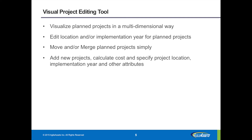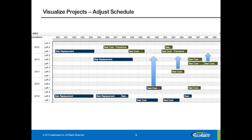This makes it really easy to visualize those things, pull them together, and say let's just take that whole project on — in one year we'll move other things around. The visual project editing tool is very visual. You have the ability to add new projects, view costs, specify project location, implementation year, and other things, all from a graphical perspective.